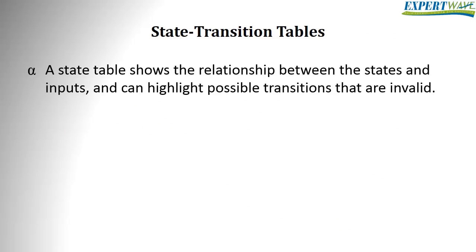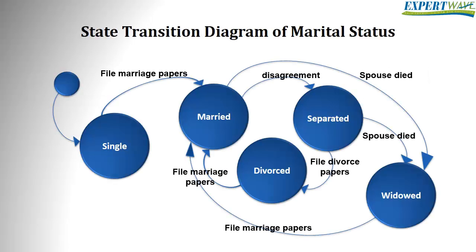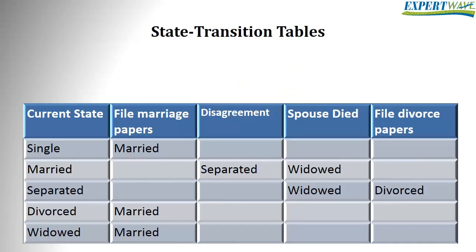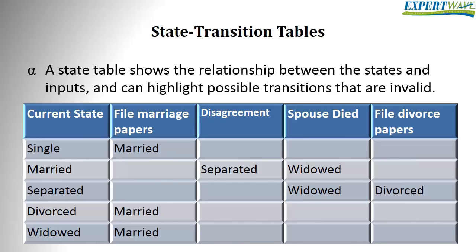Such relationships between states and transitions can be shown clearly in a state table. A state table records all possible events and all possible states. For each combination of event and state, it shows the outcome in terms of the new state and any outputs that are generated. The state table shows the relationship between states and inputs, and can highlight possible transitions that are invalid — in our case, those invalid transitions are null.